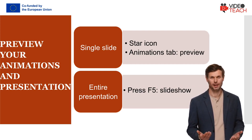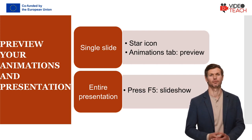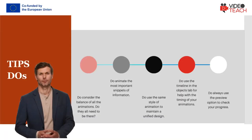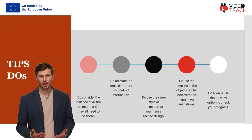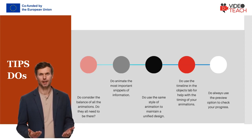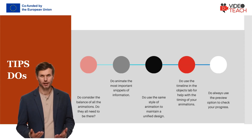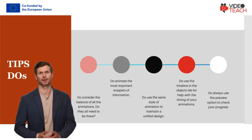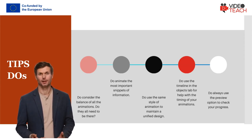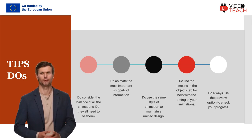Ask yourself these questions: how does the pacing feel? Are there sections in my presentation where there's too much animation, or too little? How does the timing feel? Reviewing your presentation is a final yet essential check step. Here are some important tips to remember: before you start working on your presentation, draw an outline of how it should look. Think about how your idea can reach your audience and how the different animation types will help you achieve your goal. Take a look at each slide and decide what your audience should focus on.